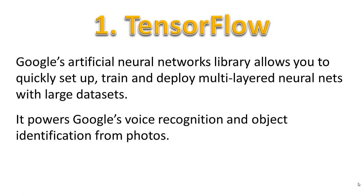Number one is TensorFlow. TensorFlow is Google's artificial neural network library. It allows you to quickly and easily set up, train, and deploy complex neural networks with large, very large data sets. It powers Google's voice recognition and object identification from photos, so it's used by Google at scale.